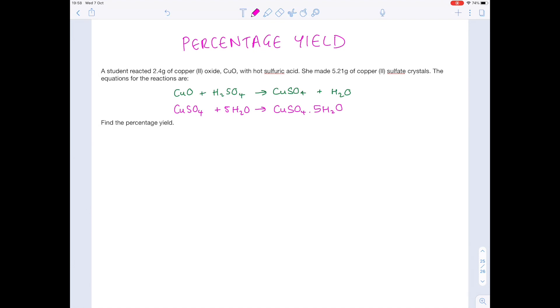Let's start by writing the equation for calculating percentage yield, and you really must just learn this. Percentage yield equals actual yield divided by theoretical yield, and then because it's a percentage yield, we need to multiply that answer by 100.